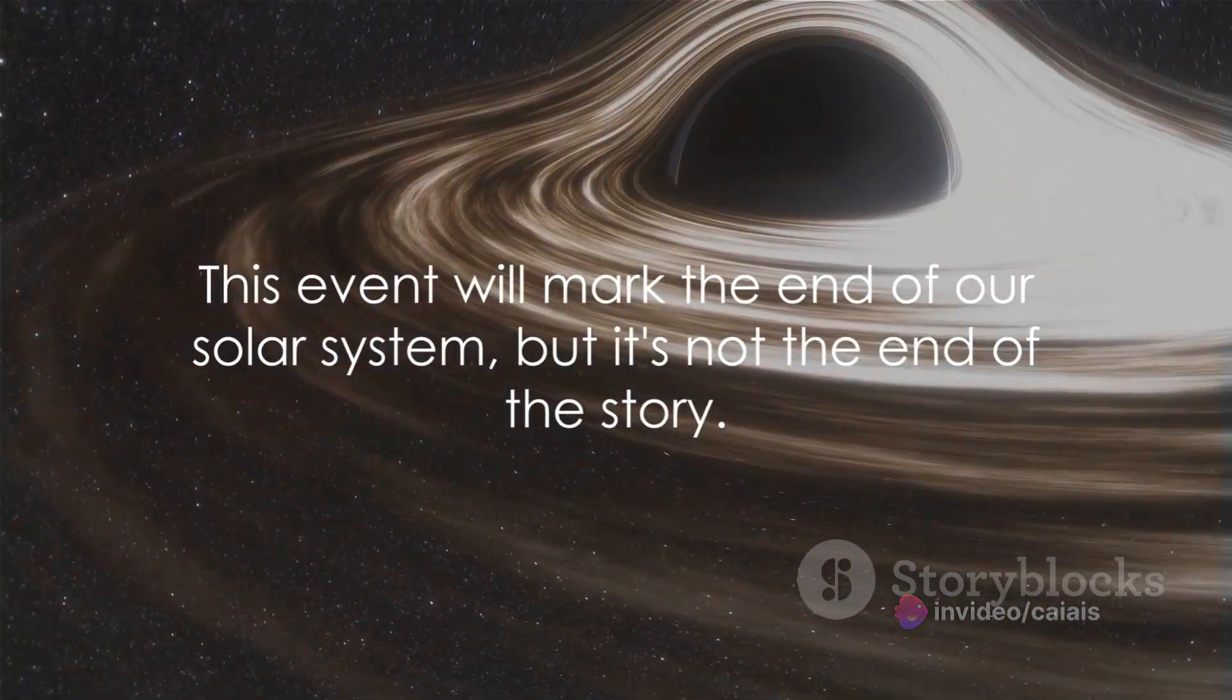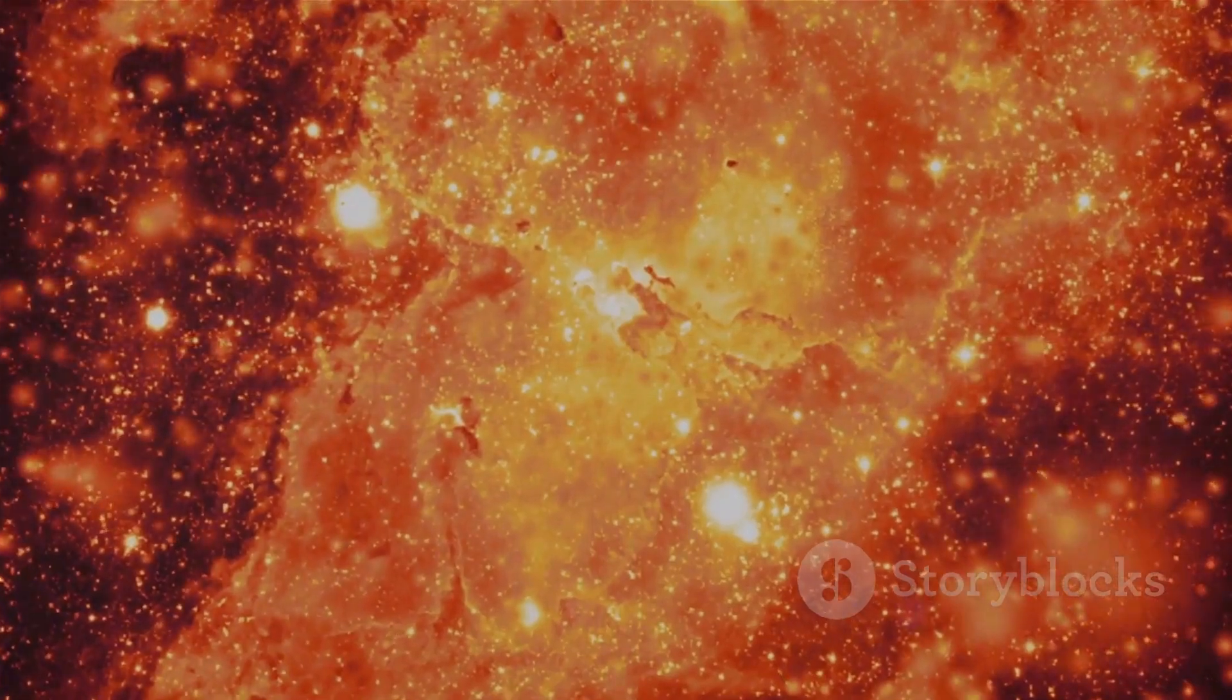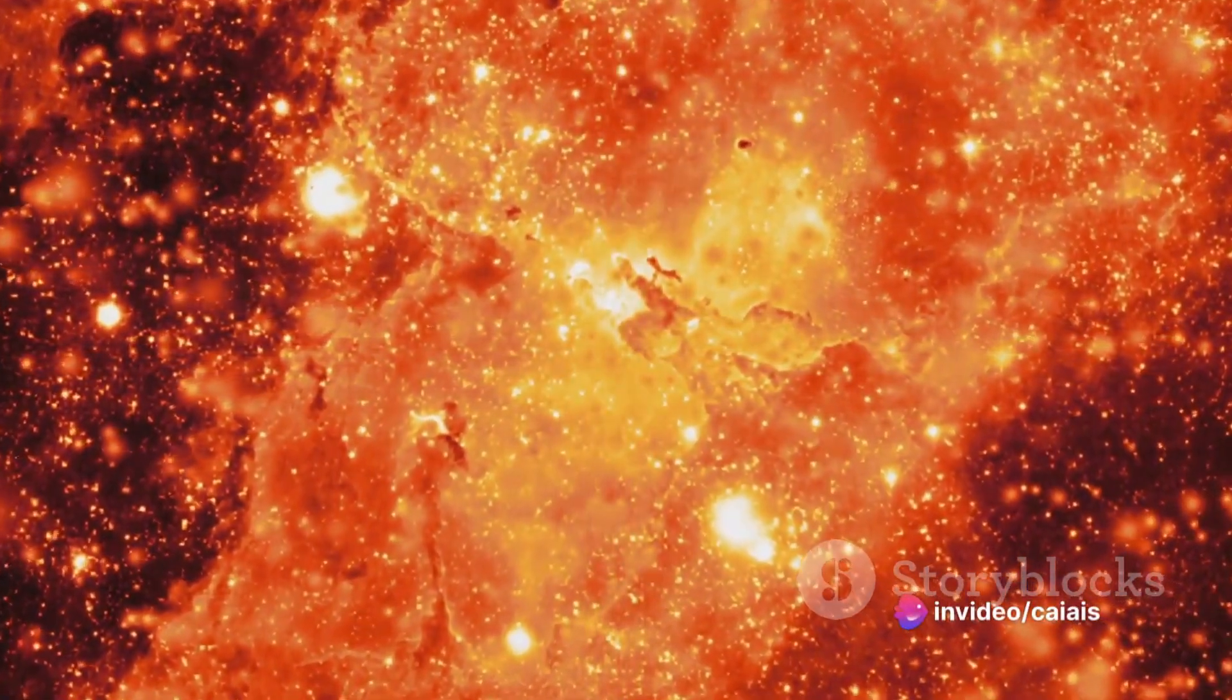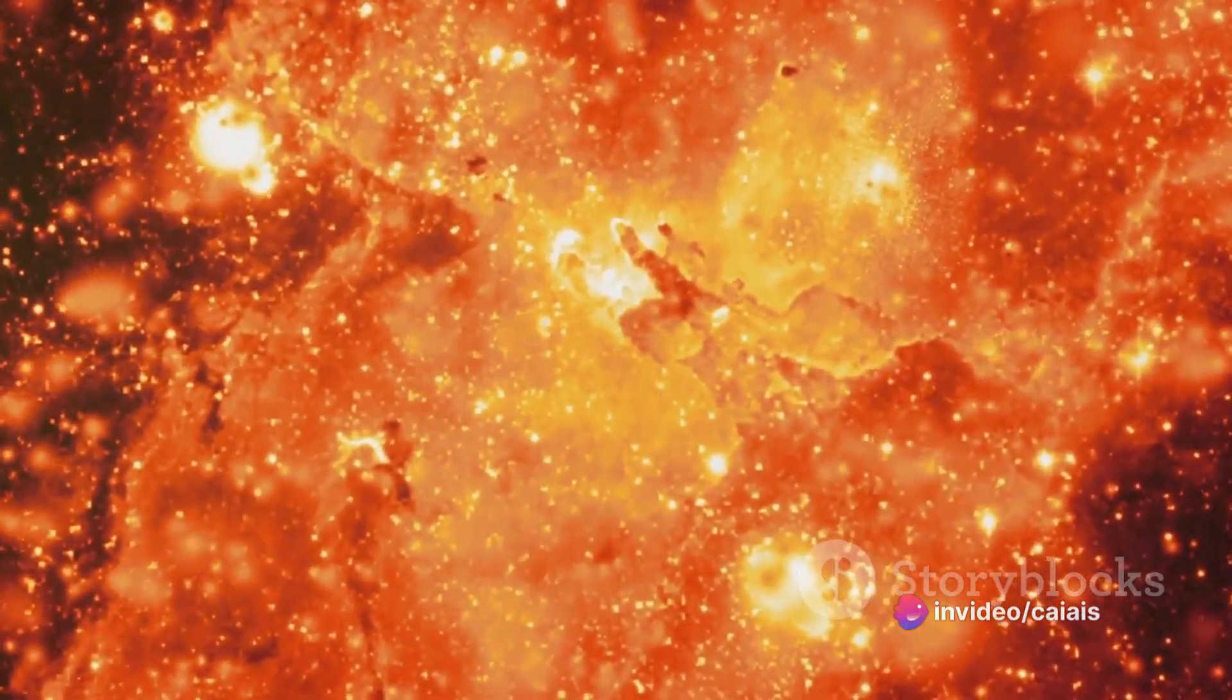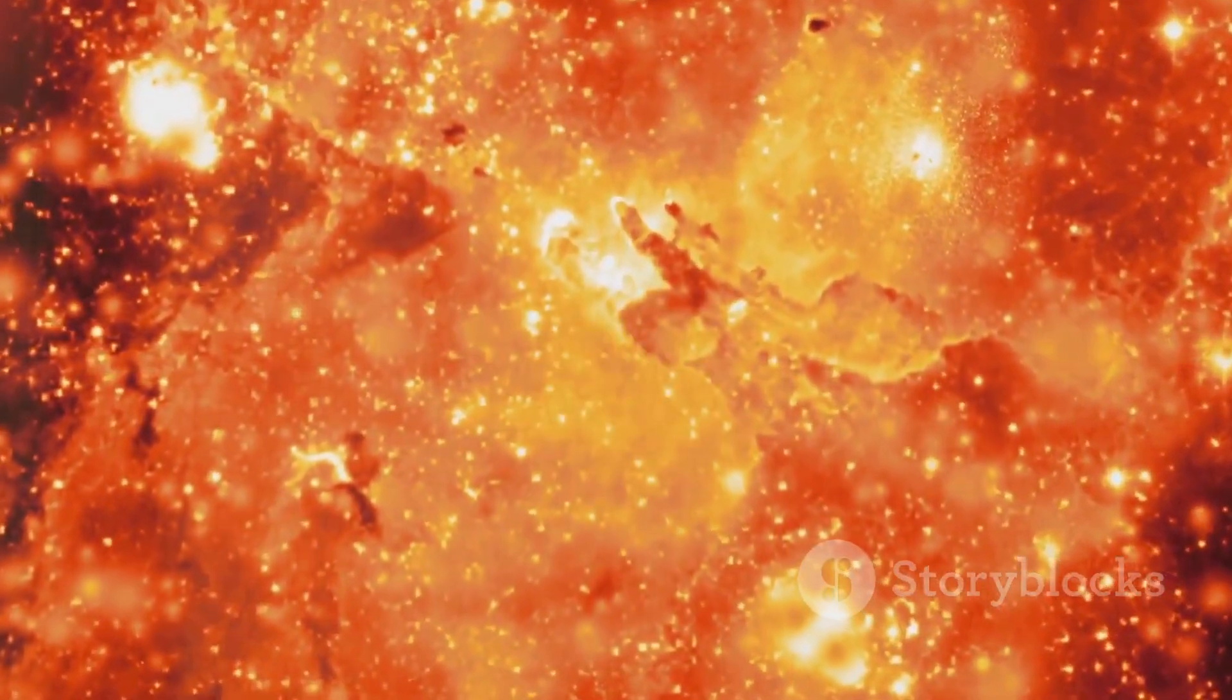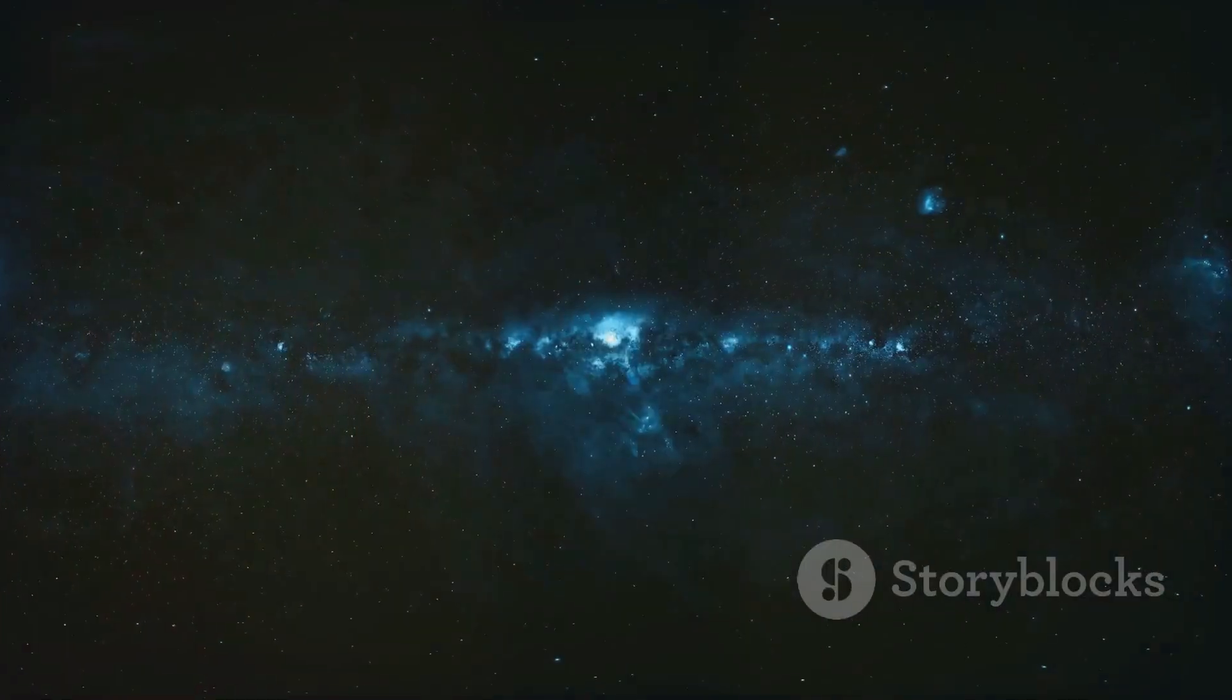This event will mark the end of our solar system, but it's not the end of the story. What could possibly happen after the solar system's end? Imagine the clock star, a celestial body born from the remnants of our sun, continuing its cosmic evolution. If its mass swells to a particular threshold, it might buckle under its own weight, triggering an implosion.